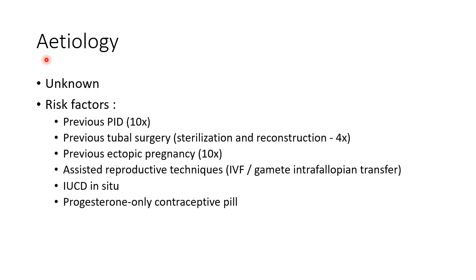Now let us see about the etiology of ectopic pregnancy. The exact cause is not yet known. The risk factors include: previous pelvic inflammatory disease, which increases the risk 10 times; previous tubal surgery like sterilization and tubal reconstruction, which increases the risk 4 times; previous ectopic pregnancy, which increases the risk 10 times; assisted reproductive techniques like in vitro fertilization and gamete intrafallopian transfer; and intrauterine contraceptive device in situ and progesterone-only contraceptive pills.